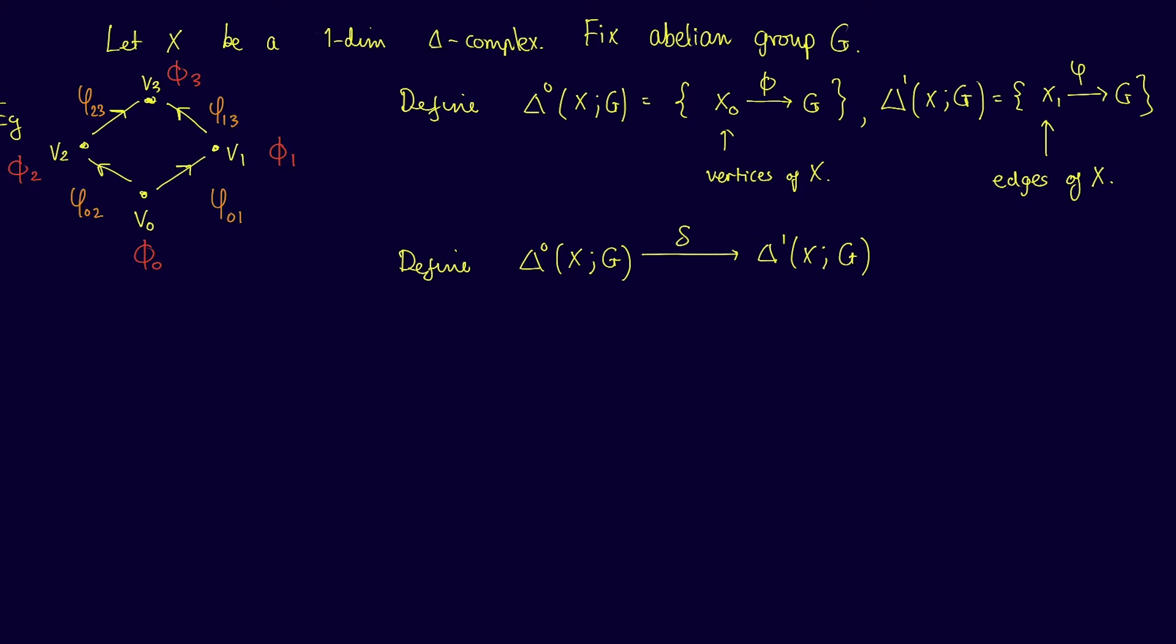Thus we'll define δφ as a function from the edges of X into the group G. We'll define this δφ on the edge as the difference of φ at the boundary of the edge. That is, we define δ of φ acting on the edge going from vertex vᵢ to vertex vⱼ as φ on vⱼ minus φ on vᵢ. You can write this as φⱼ minus φᵢ.